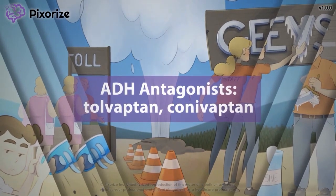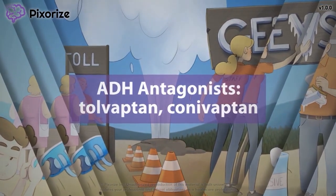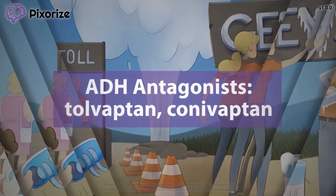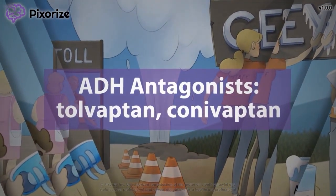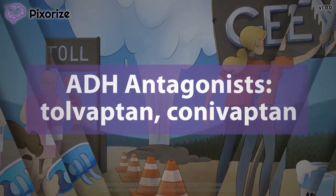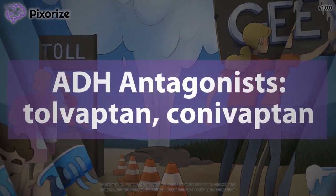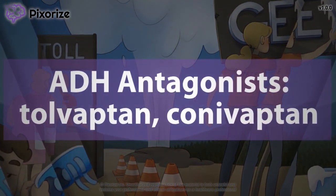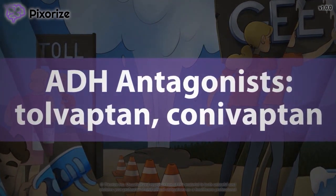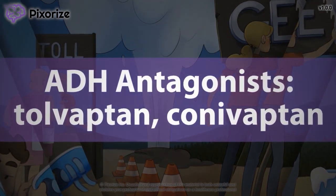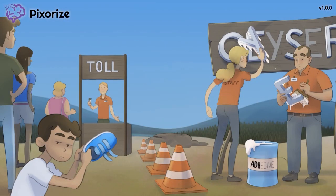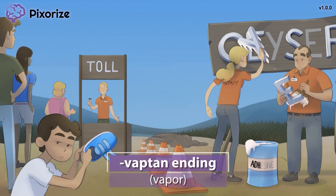ADH antagonists are a class of medication that work to inhibit the effects of antidiuretic hormone, also known as ADH or vasopressin. In this scene we'll cover everything you need to know about ADH antagonists so you'll be sure to nail it on test day. Welcome to Vapor National Park, the newest and coolest national park around.